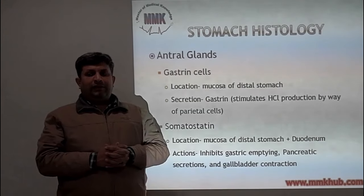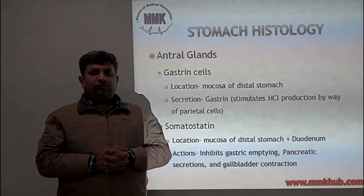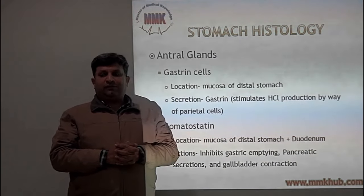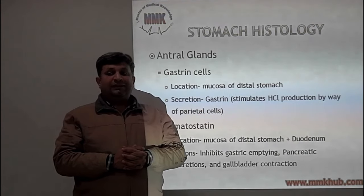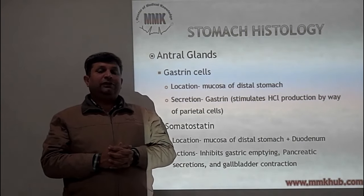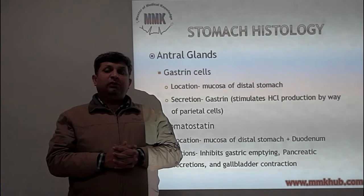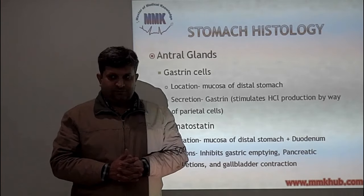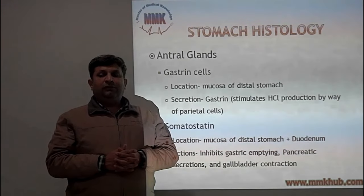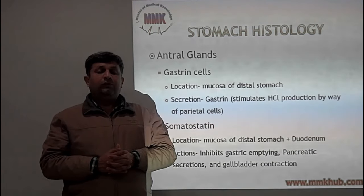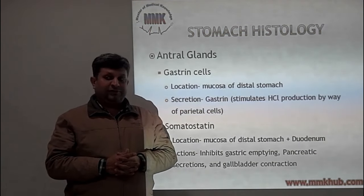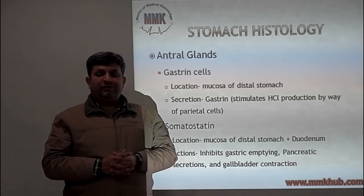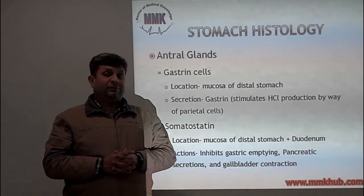Antral glands contain G cells and somatostatin cells. G cells are located in the mucosa of the distal stomach and secrete gastrin. Gastrin stimulates hydrochloric acid production by the parietal cells. Somatostatin is released by cells in the antral gland mucosa of the distal stomach and duodenum, and its action includes inhibition of gastric emptying, pancreatic secretion, and gallbladder secretion.